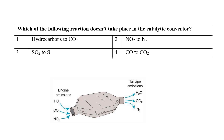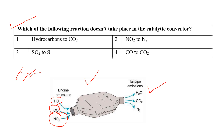Question fifteen: Which of the following reactions does not take place in the catalytic converter? Catalytic converters convert hydrocarbons, carbon monoxide, and oxides of nitrogen from harmful to less harmful forms. Checking the options: hydrocarbons to CO2 — this reaction takes place; NO2 converted to nitrogen — this also takes place; SO2 converted to sulphur — this reaction does not take place; CO converted to CO2 — this takes place. So the third option is the right answer: sulphur dioxide converted to sulphur is not carried out by the catalytic converter.